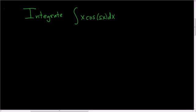We are being asked to integrate x times the cosine of 5x. In this problem we can use either tabular or integration by parts. Let's go ahead and be lazy and use tabular.